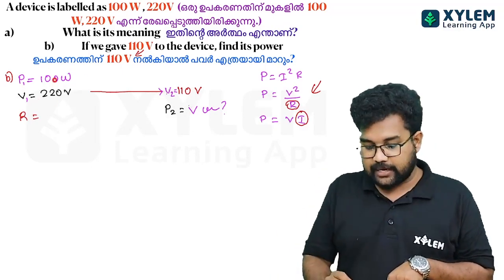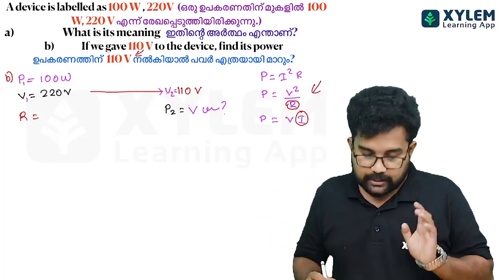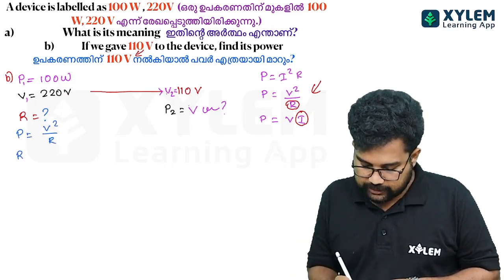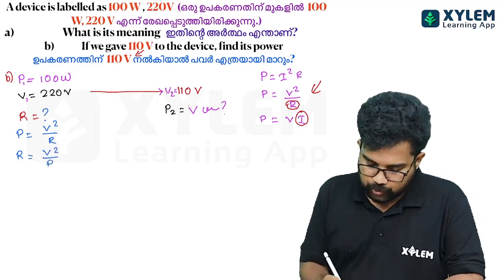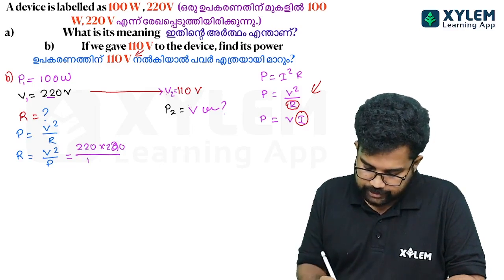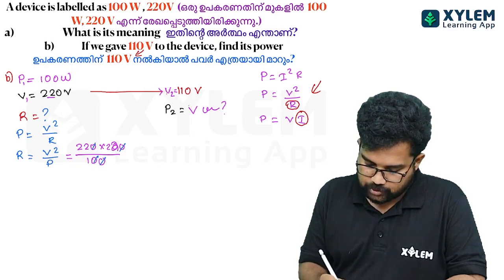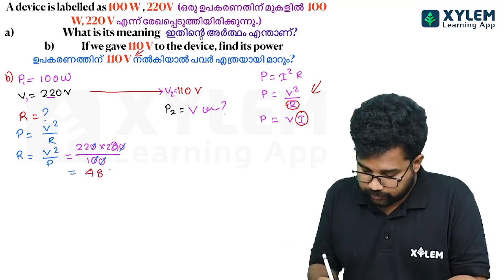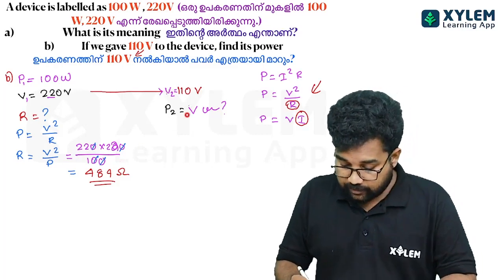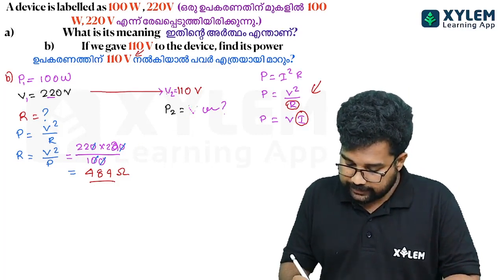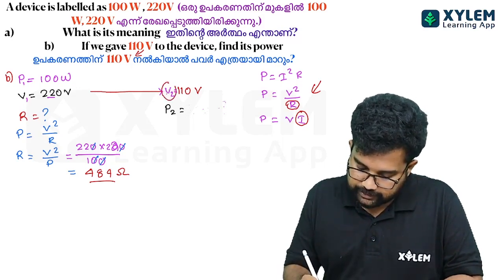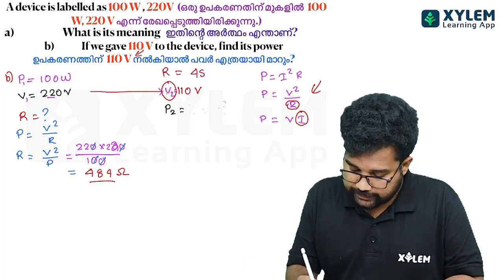The device is 100W, 220V. Using P equals V squared by R, R equals V squared by P, which is 220 squared divided by 100. That is 220 times 220 divided by 100. The zeros cancel, and 22 times 22 equals 484. So R equals 484 Ohm.